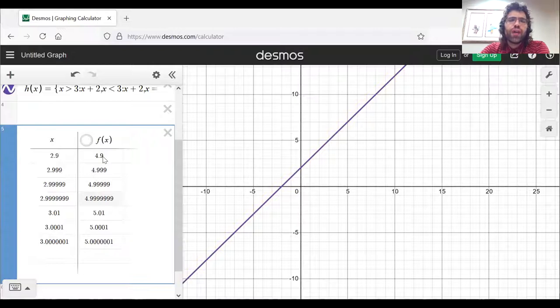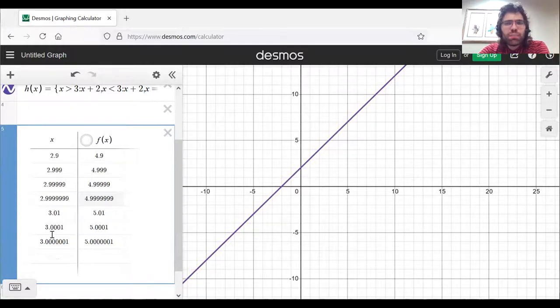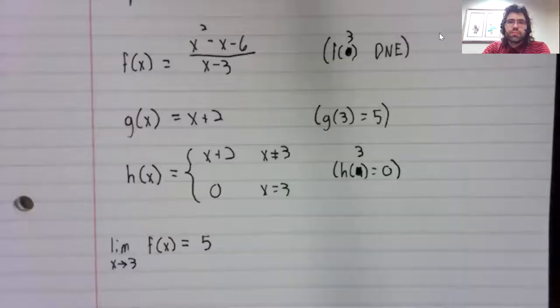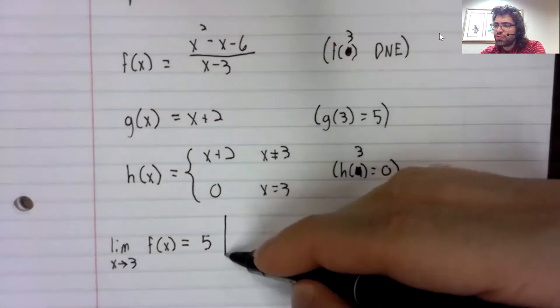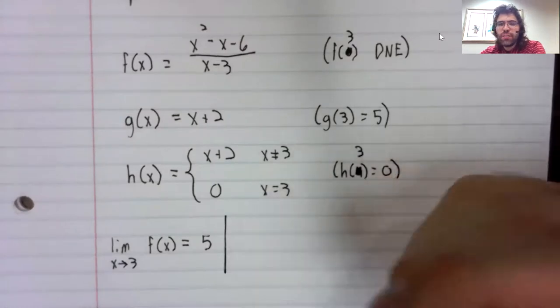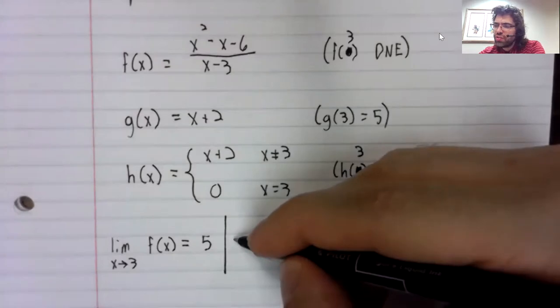And you'll notice one number conspicuously absent from this table. In this table, we do not ask what happens at three itself. We only ask what happens as x approaches three. And from the table, it looks like as x approaches three, f of x approaches five.